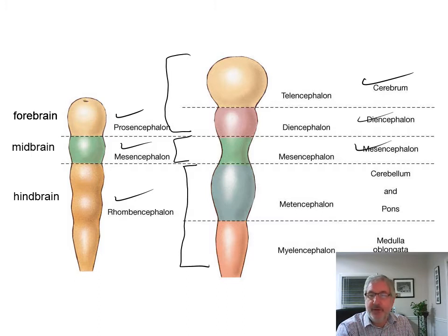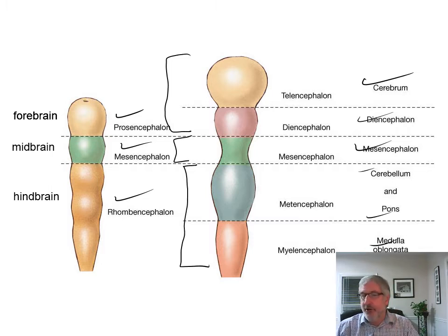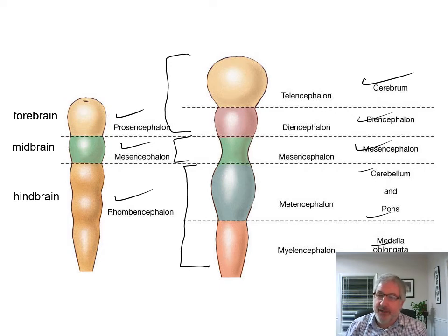Then we have the metencephalon, which is the cerebellum, pons, and medulla oblongata. So there's where all your regions of your brain come from.